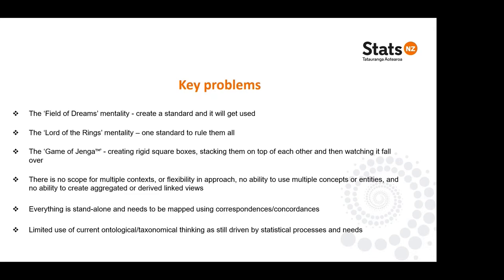Then there's the Lord of the Rings mentality — one standard to rule them all — and we're all special, we're all unique, there are reasons why we can't use it, whether that's cost, resource, IT systems, whatever. And ultimately we've reached a critical part of the game of Jenga, where we've continued to create rigid square boxes stacked on top of each other, and they're all starting to fall over because our classifications have run out of space. We can't add new content to most international standards because we've used up all the code patterns — if you create more levels you have to change the code patterns, that affects IT systems, that then affects the time series. There's no scope for multiple contexts, no flexibility, we can't have multiple concepts, and there's no ability to create aggregated or derived linked views because everything's standalone and needs to be mapped using a concordance or correspondence.